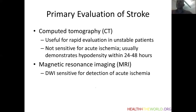When stroke is suspected in children based on a focal neurologic deficit or sometimes a focal seizure with a non-resolving neurologic deficit, the first-line evaluation may be by either CT or MRI. CT is useful for rapid evaluation in unstable patients and is more widely available, but it's not very sensitive for acute ischemia. Usually a hypodensity is present within 24 to 48 hours. MRI is much more sensitive in the acute period, especially diffusion-weighted imaging, which can detect acute ischemia within hours.